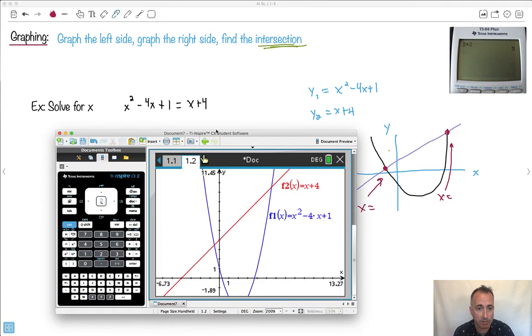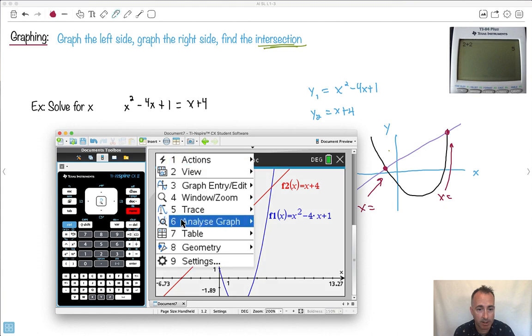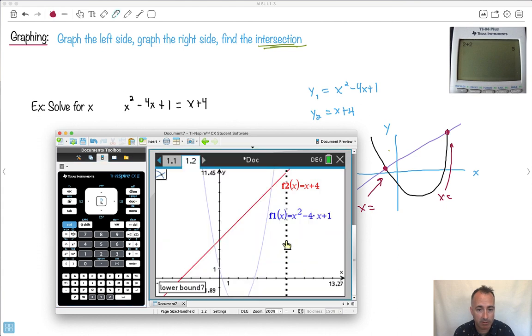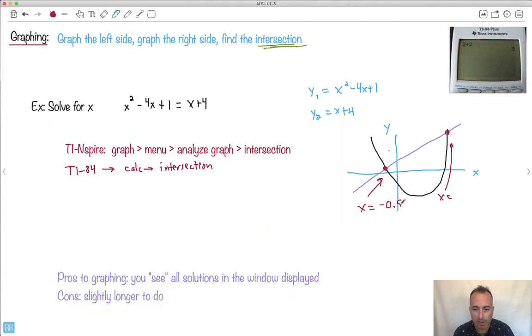So on mine, I'm just going to go menu and then go analyze. Then I find the intersection. And sometimes it asks you for like the first graph, a second graph, lower bound, upper bound. It wants to know because it wants to know where are you looking. I'm going to say lower bound is over here, upper bound is here. They all do something like that. Do you notice I have minus 0.541? So that's one of my answers, isn't it? So it's minus 0.541 to three significant figures, at least. That's my first answer. But ho, ho, ho. Look at this. There is another solution.